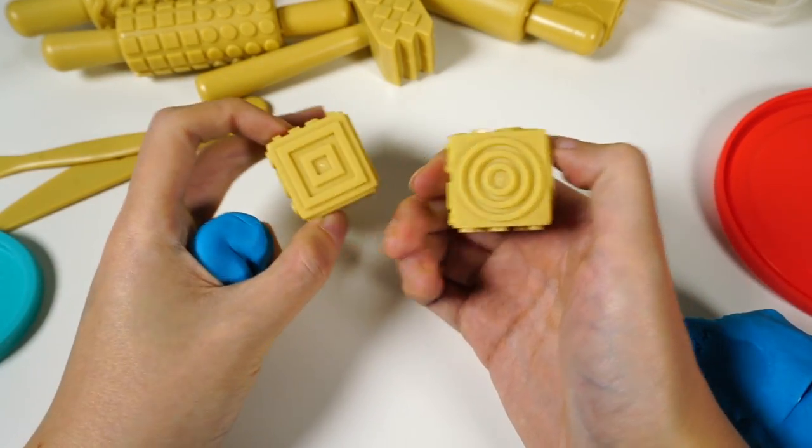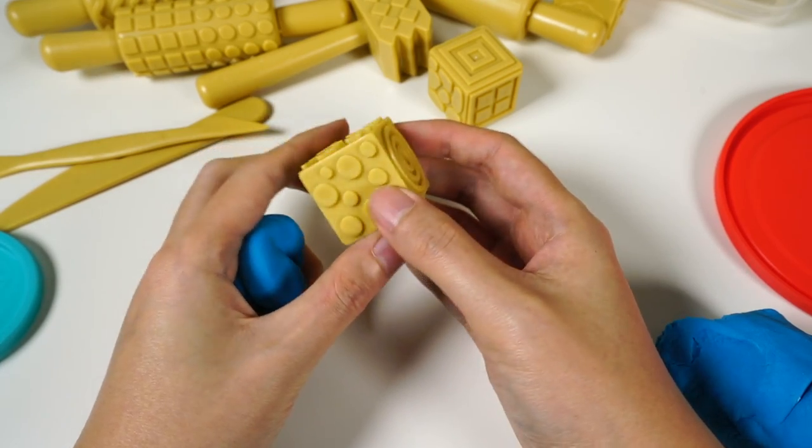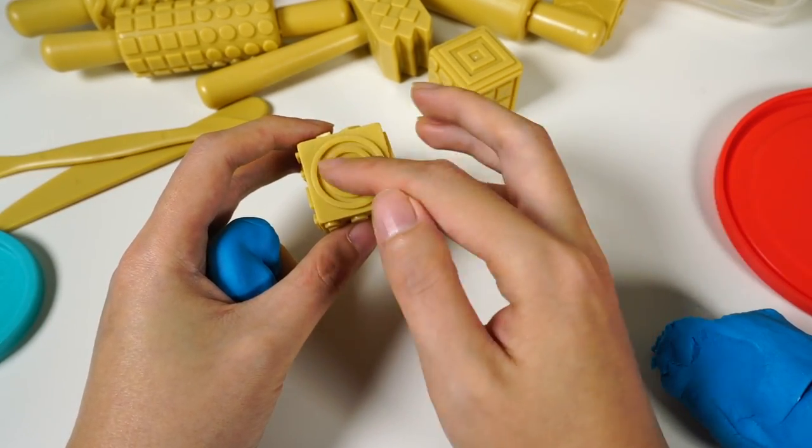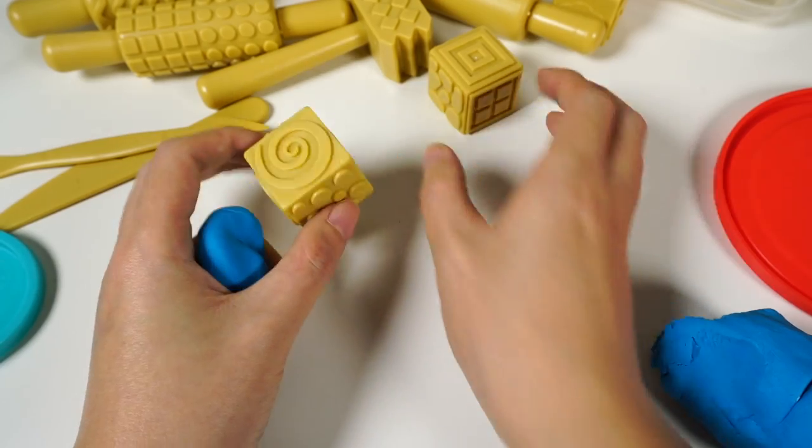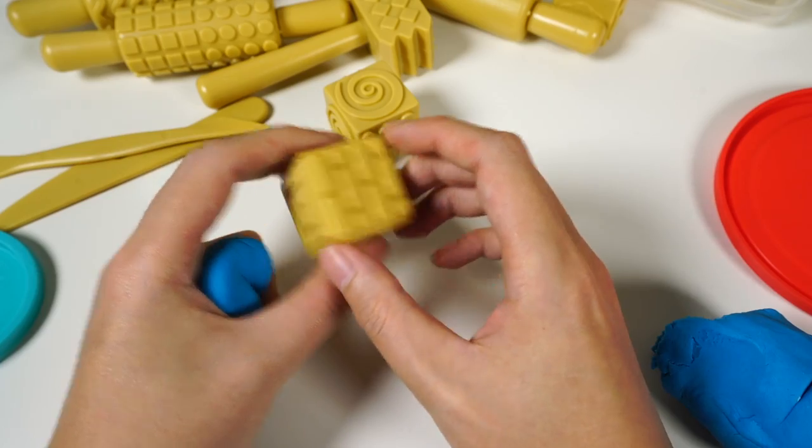This one is square, and this is circle. Yeah, there are several shaped textures and this one is square shaped textures.